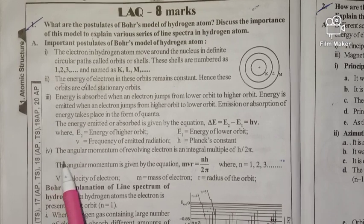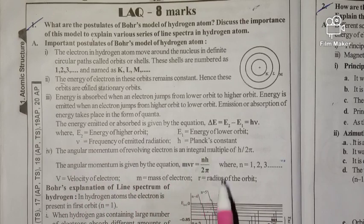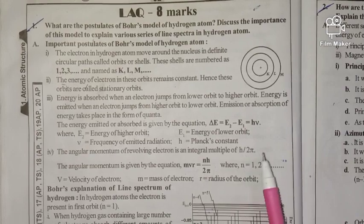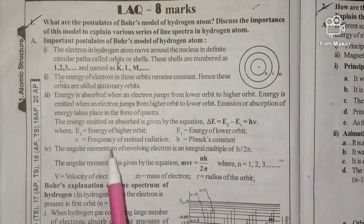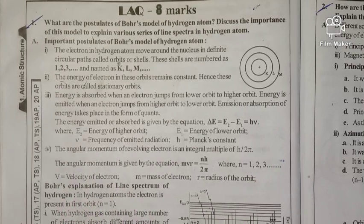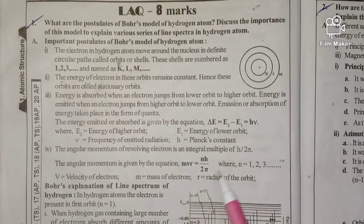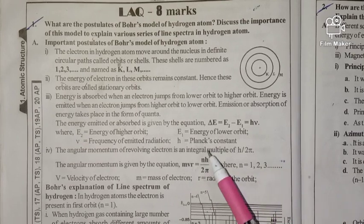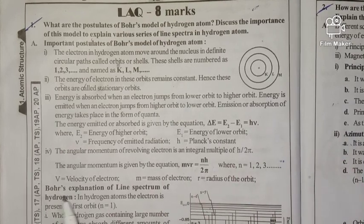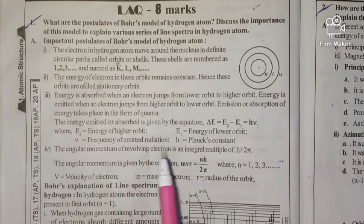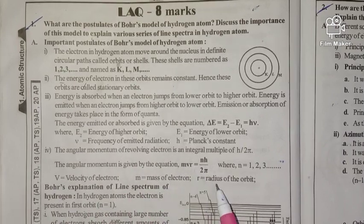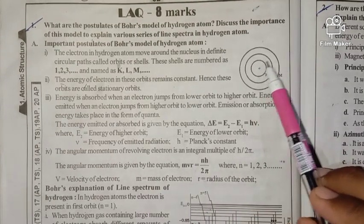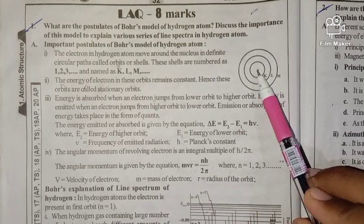Fourth postulate: the angular momentum of the revolving electron is an integral multiple of h divided by 2π. The angular momentum is given by the equation mvr equals nh over 2π, where n is 1, 2, 3..., v is the velocity of the electron, m is the mass of the electron, and r is the radius of the orbit.